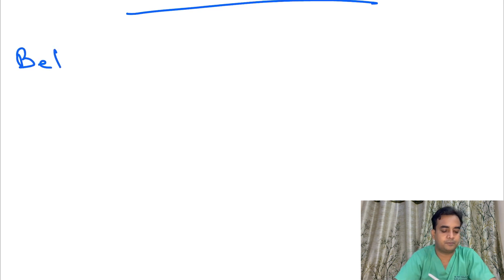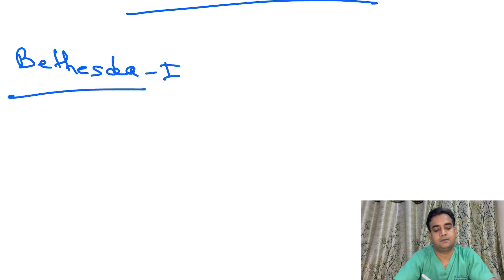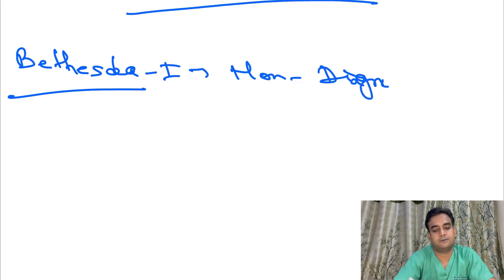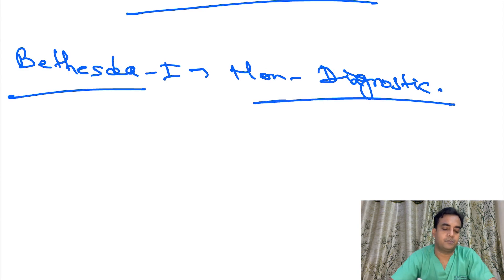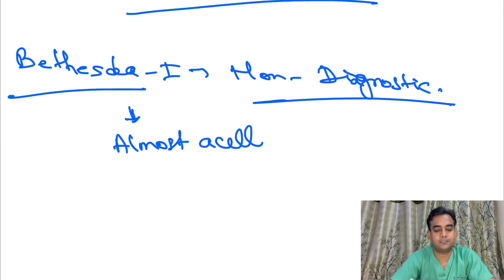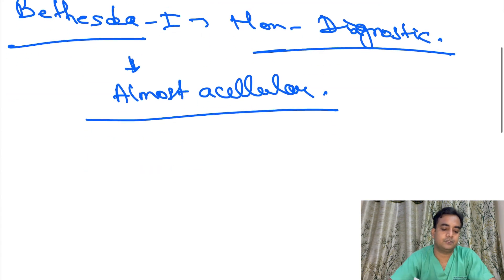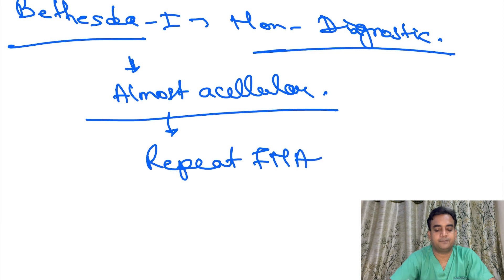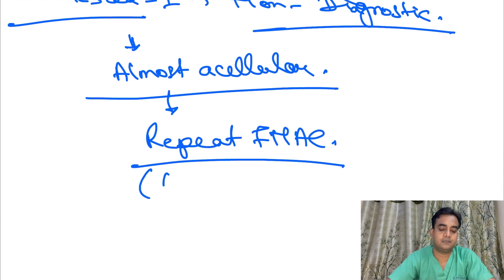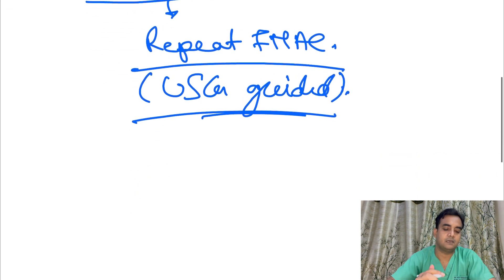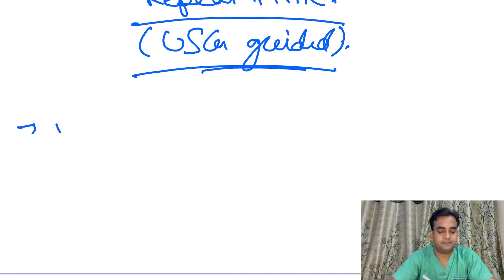Bethesda 1 is non-diagnostic. It is non-diagnostic because the aspirate is almost acellular. What you have to do is repeat the FNAC, and the repeat FNAC should be done USG-guided.